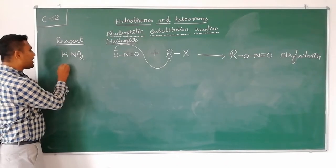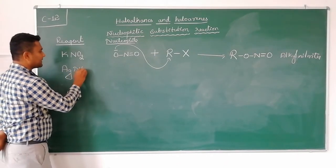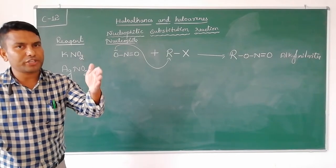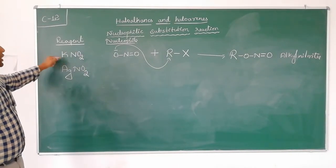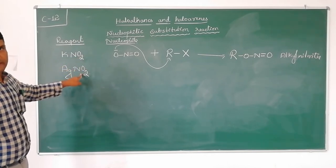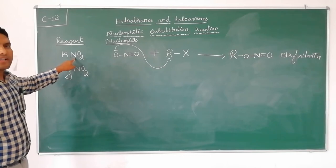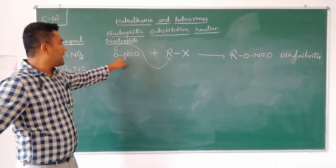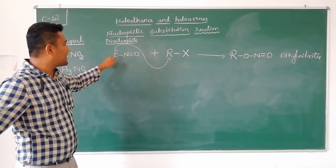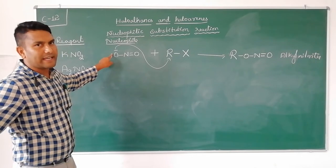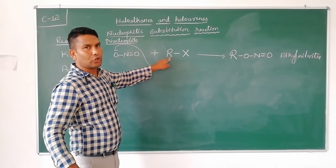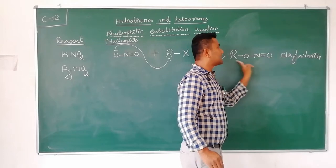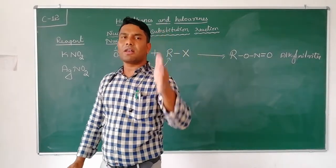Now, just as we compared potassium cyanide and silver cyanide, we have potassium nitrite and silver nitrite. Potassium nitrite is ionic and dissociates; the oxygen carries a negative charge and is the nucleophilic center. This oxygen attacks the alkyl group and X is substituted, giving R–O–N=O. These compounds are called alkyl nitrites.